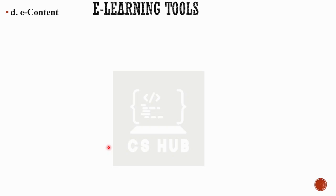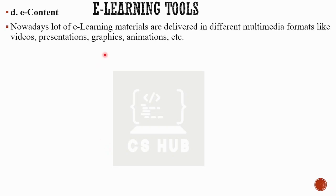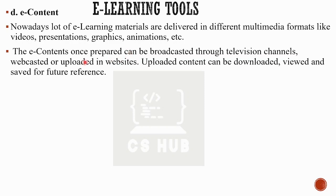Next is e-content. All of this content is available in digital format, including video, image, and audio. In e-learning materials, video, presentations, graphics, animations, and images are available. E-contents once prepared can be broadcasted through a television channel, webcasted, or uploaded on websites. Uploaded content can be downloaded, reviewed, and saved for future reference.